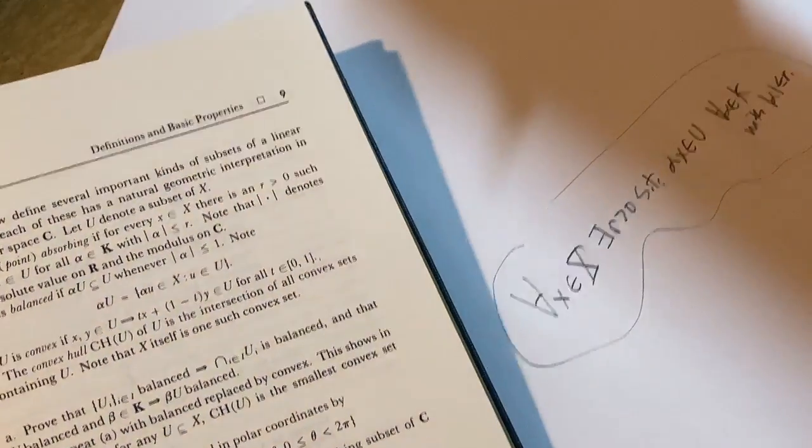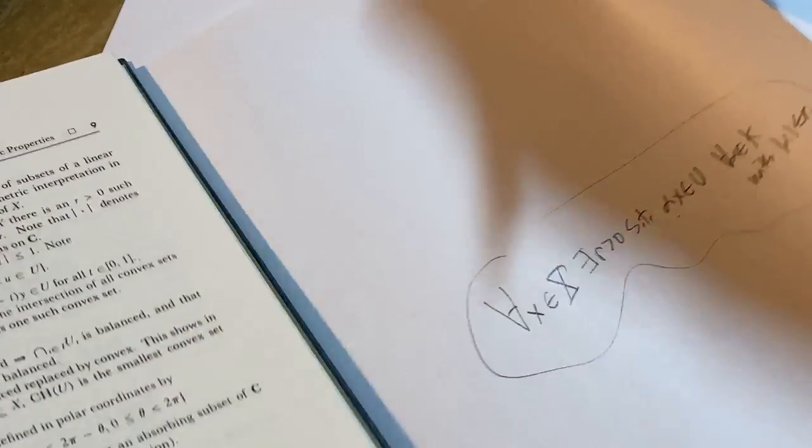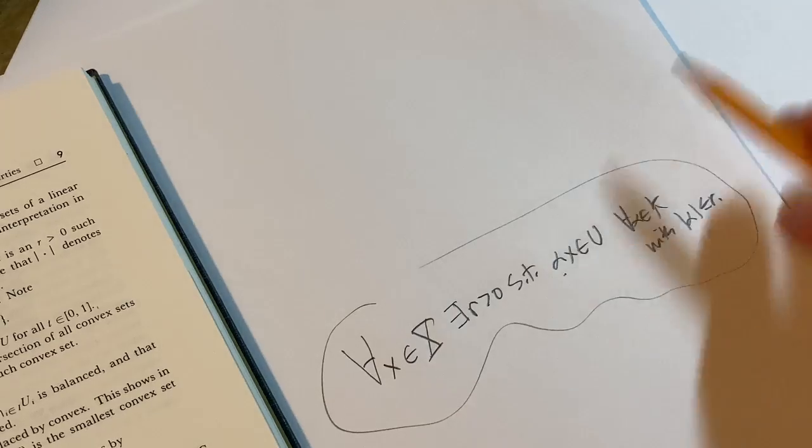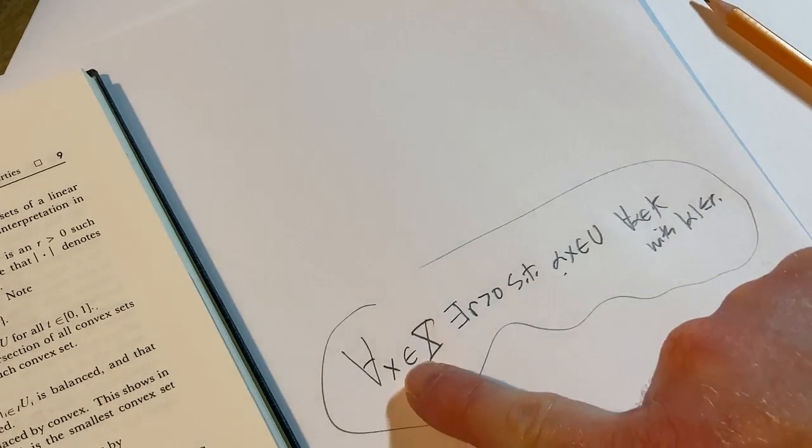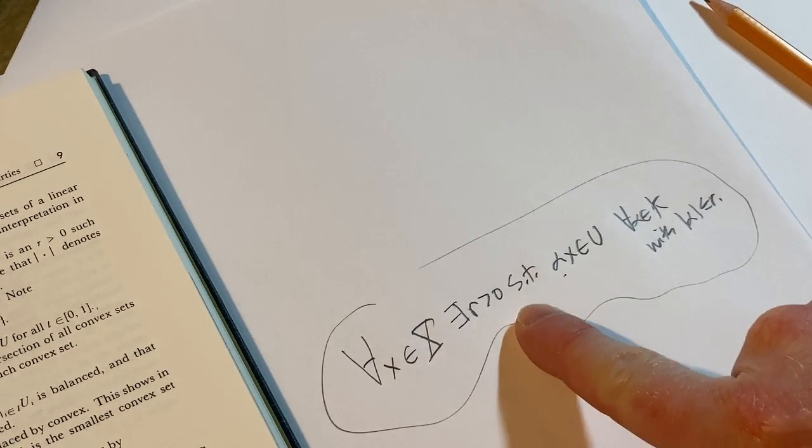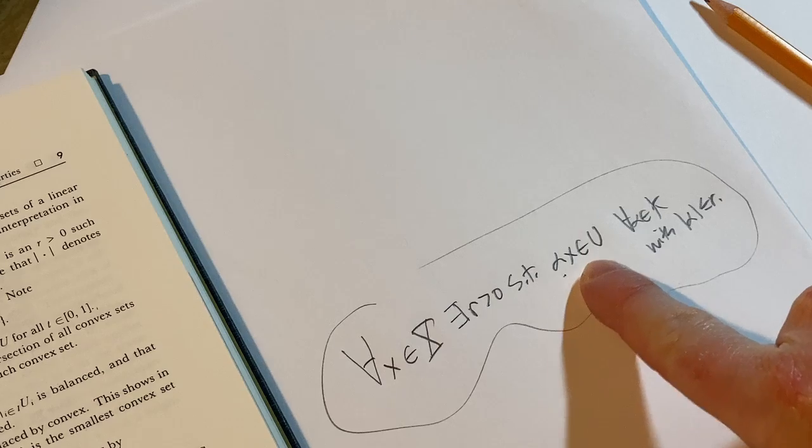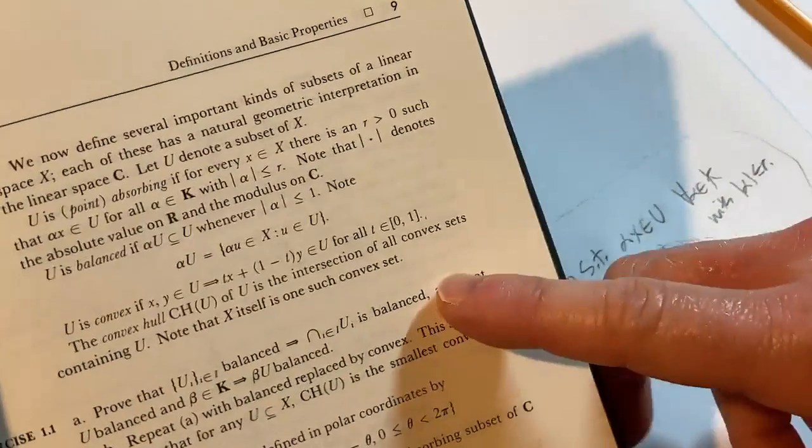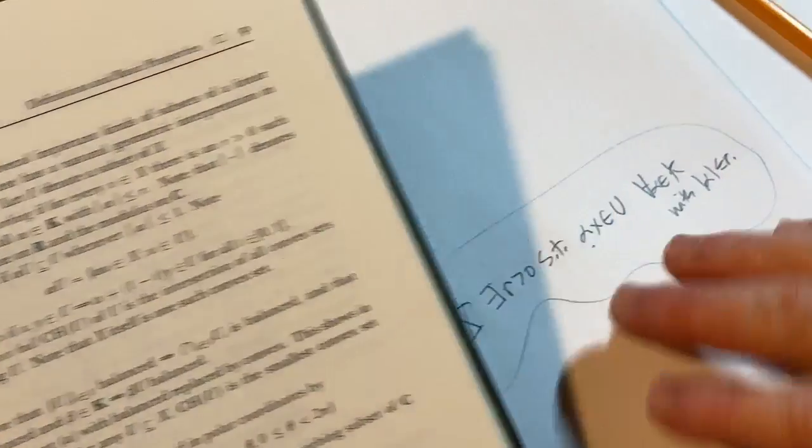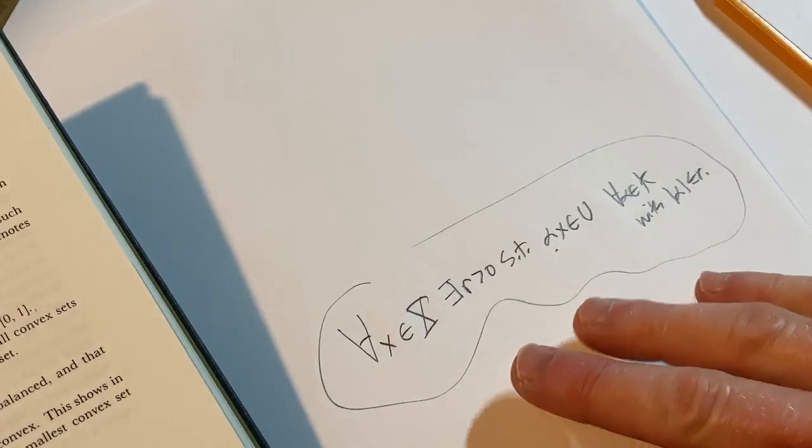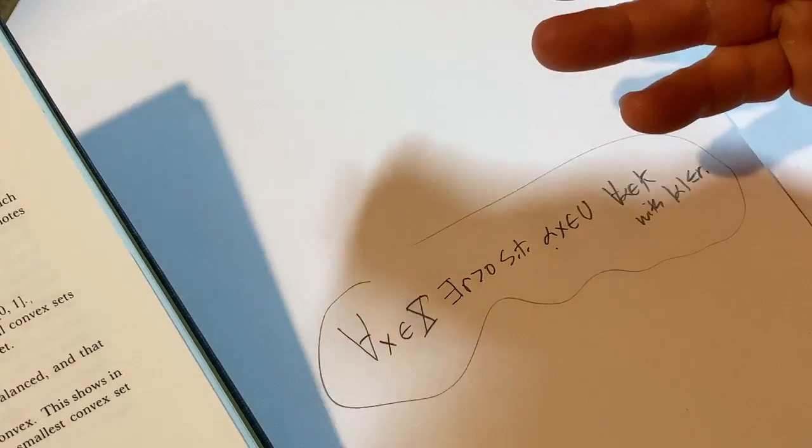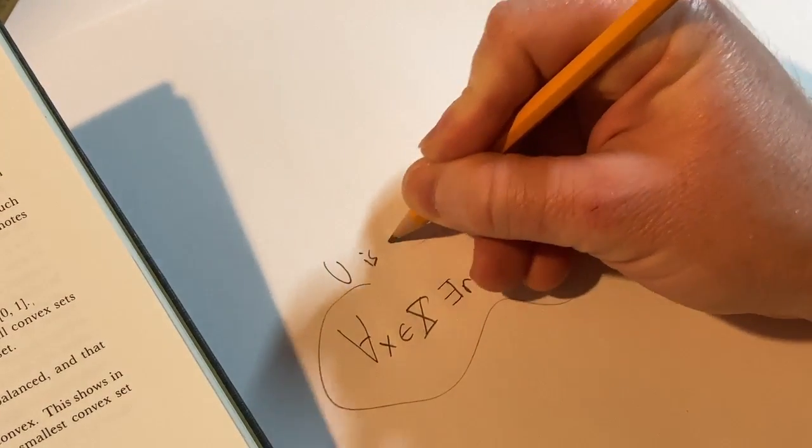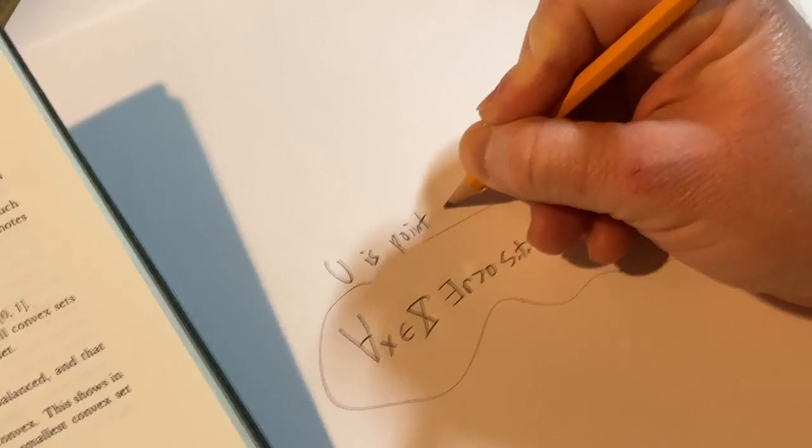Let me fix my camera here. I apologize. My setups are pretty good. Someday I will get a better camera. Hopefully you can read that. I think you can. I think the focus is coming in pretty good. For all X in X, there exists an R greater than zero such that alpha X is in U for all alpha in K with modulus less than or equal to R. And that is called U is point absorbing if it satisfies this property. So any set that satisfies this property is absorbing or point absorbing.